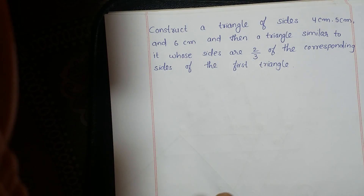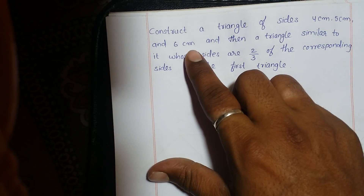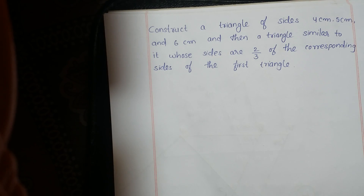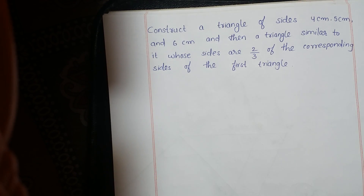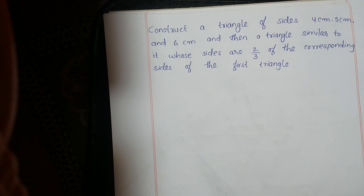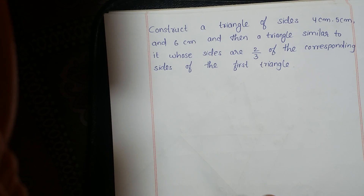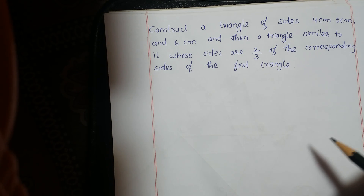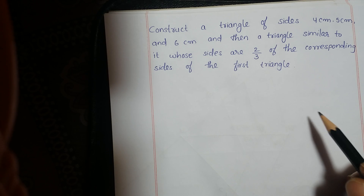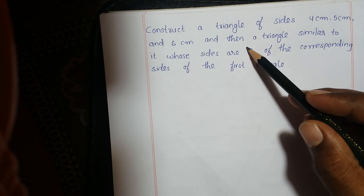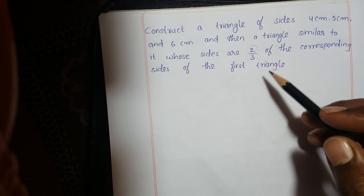Construct a triangle of sides 4 cm, 5 cm, and 6 cm. Then construct a triangle similar to it whose sides are 2/3 of the corresponding sides of the first triangle. So here we have to construct a triangle first, then construct a triangle which is similar to the given triangle whose sides are in the ratio 2/3.